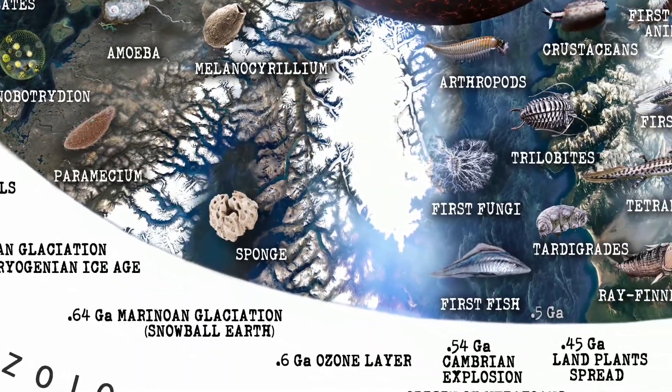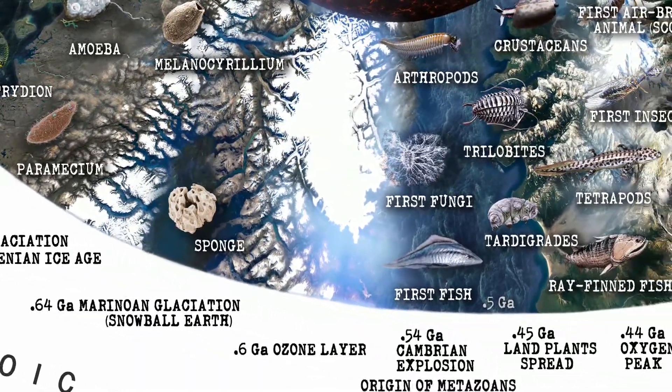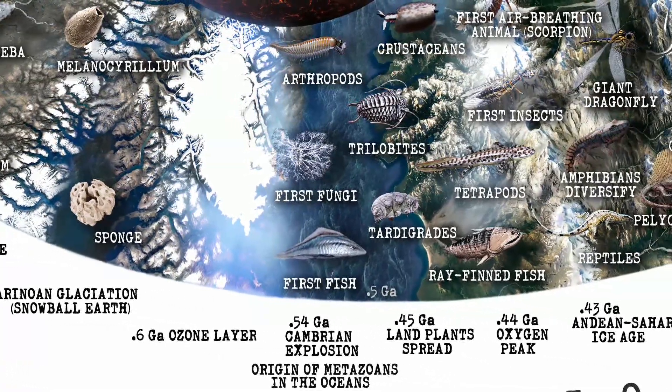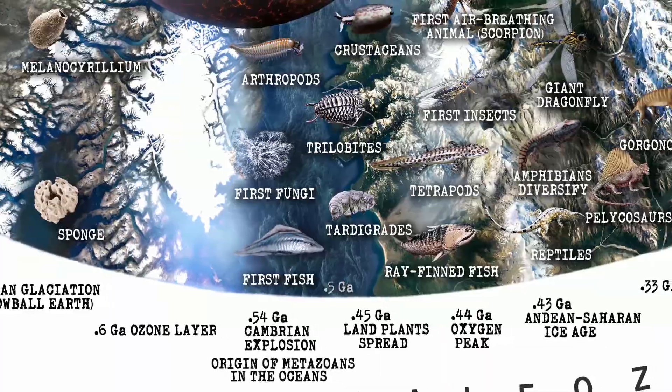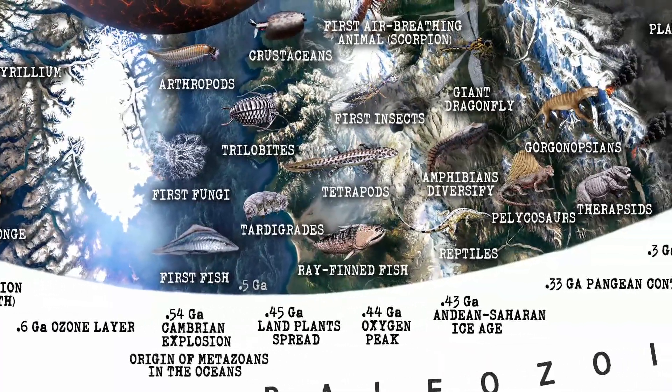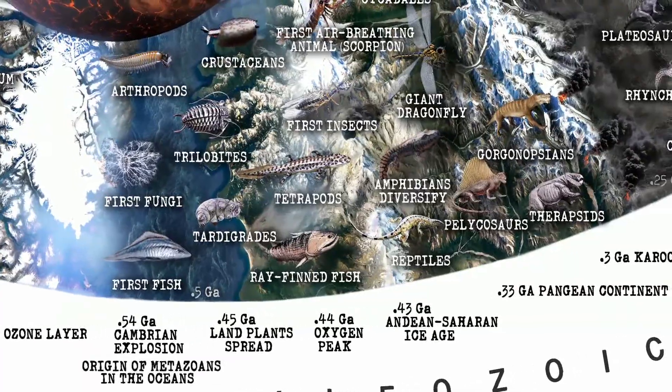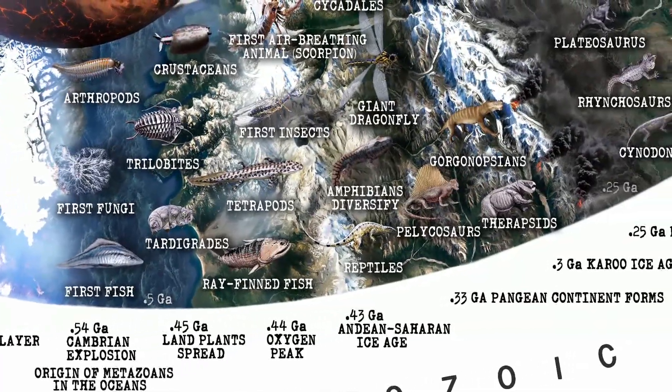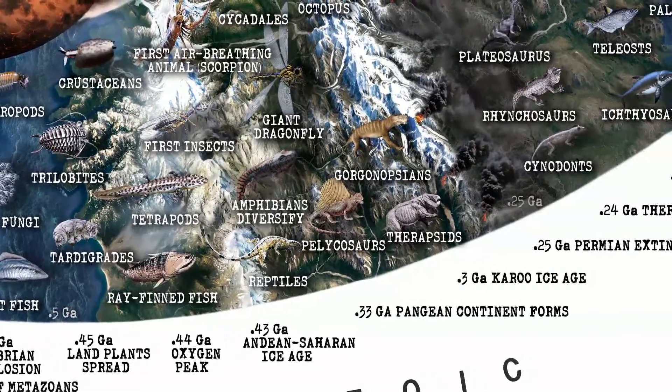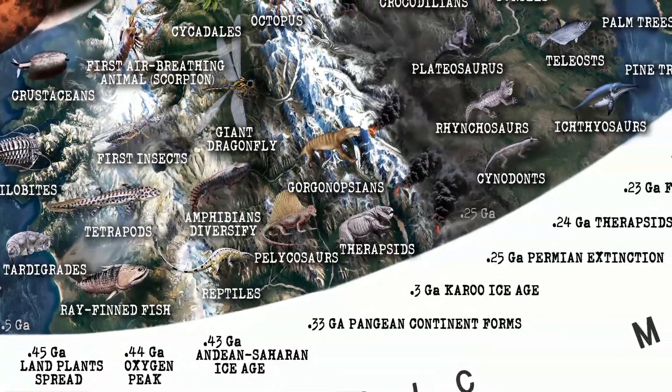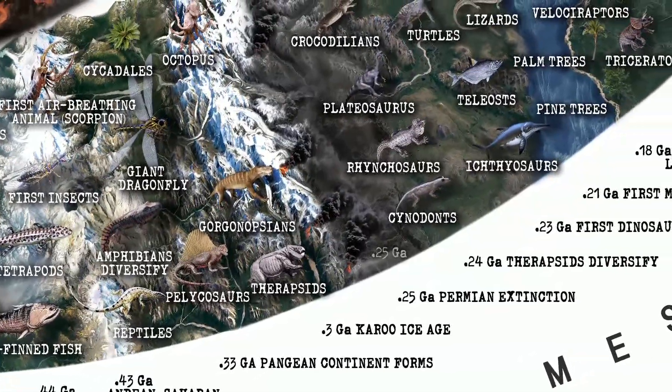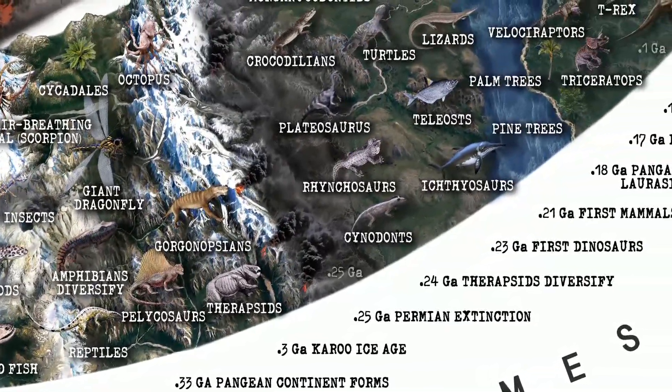Sponges, perhaps the first metazoans with simple nerve nets. Now we get the Cambrian explosion with arthropods, fish. There's a bunch of life that ends up dying, that ends up going extinct in the Cambrian explosion. Crustaceans are also part of the Cambrian explosion. Now we have complex multicellular life and we get reptiles, we get birds, we get cephalopods like octopi.